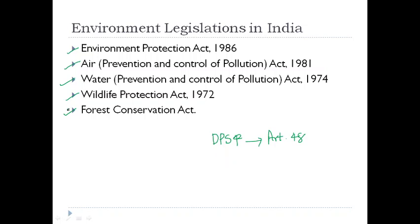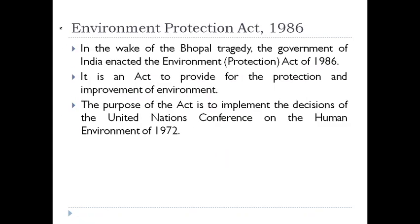First, let us see the Environment Protection Act of 1986 and its salient features. In the wake of the Bhopal tragedy that happened in 1984, the government of India enacted the Environment Protection Act of 1986. This act provides for the protection and improvement of the environment. The objective of this act is to protect the environment and to implement the decisions of the United Nations Conference on Human Environment.